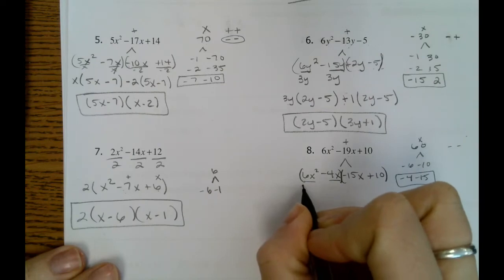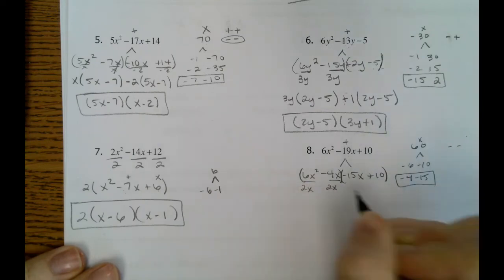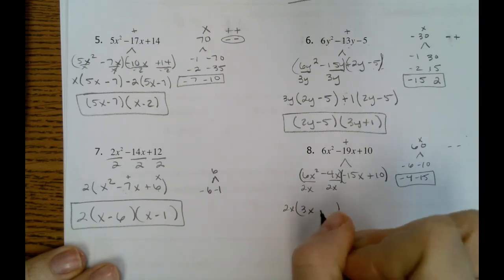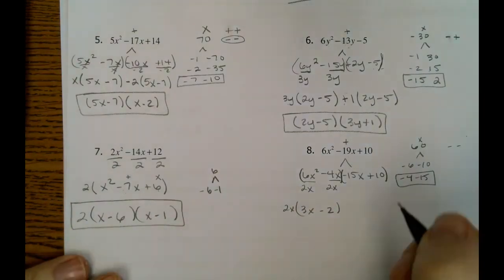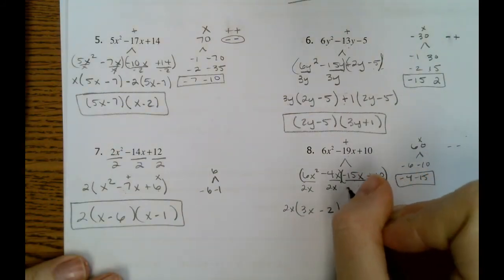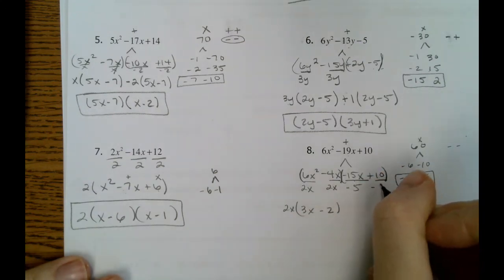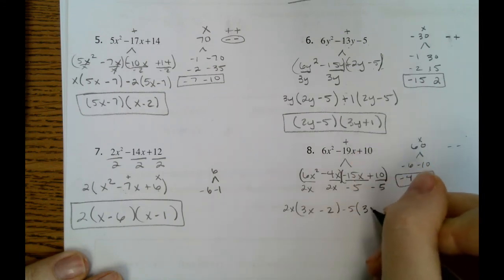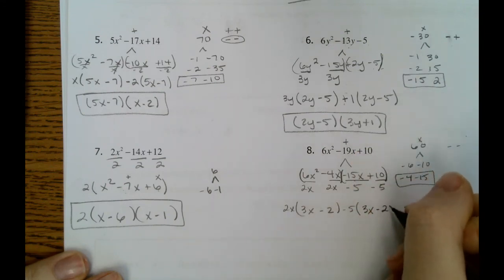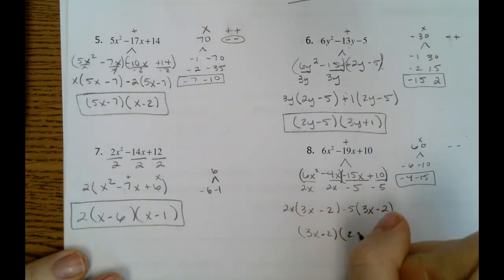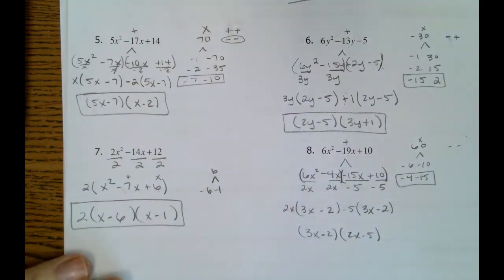So here our GCF will be 2x. So we're left with 3x minus 2. Here we start out with a negative, so we know that our GCF is going to be a negative number. And 5 goes into both 15 and 10. So here we're left with 3x minus 2. Our parentheses are the same, which is always a good thing. And then 2x minus 5. Our GCFs make that second part of our answer.